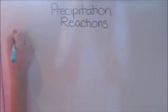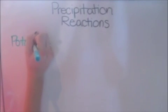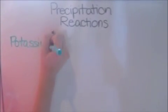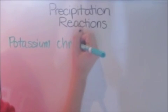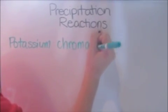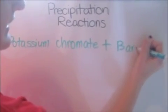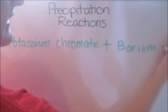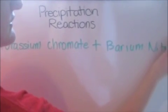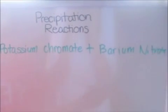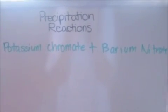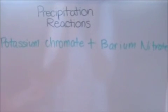So our first example is with a solution of potassium chromate and barium nitrate. And we are told that these two go to form an unknown yellow solid. We need to figure out what the products are going to be.